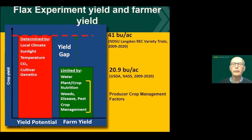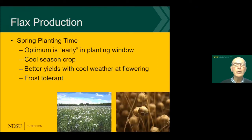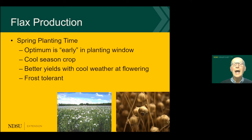We have a lot of potential for the production of flax. The genetics are there — if Langdon can get 40 bushels, the genetic potential is even higher because even at Langdon there are sometimes limiting factors. Flax is a cool season crop, so we want to plant as early as possible to have an extended vegetative period, with bloom occurring during the cooler part of the season and as long a grain-filling period as possible. The longer the plant can obtain sunlight, the higher the yield potential.